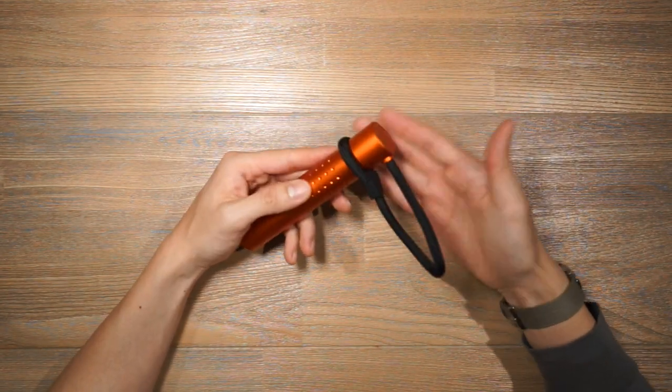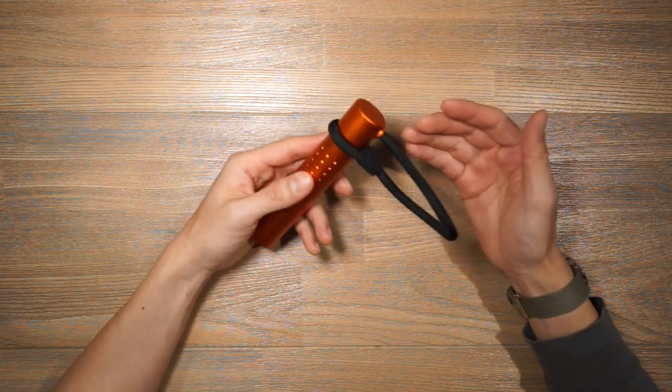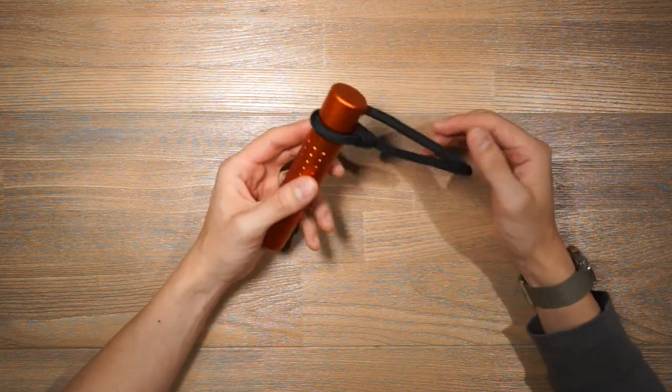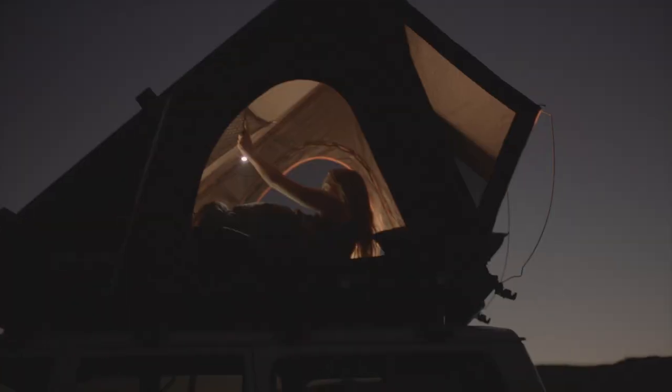This allows for a variety of different applications for the flashlight. You can simply hook it onto a backpack or perhaps if you're camping you could plug this into one of the tent poles and then cinch it up so you have a little bit of a lantern inside your tent.